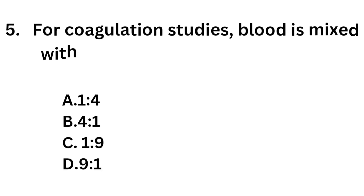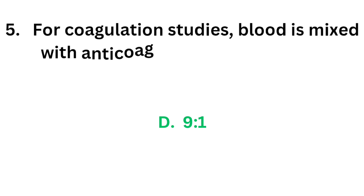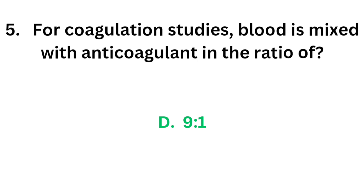Question number 5. For coagulation studies, blood is mixed with anticoagulant in the ratio of: Option A: 1 to 4. Option B: 4 to 1. Option C: 1 to 9. Option D: 9 to 1. The correct answer is Option D, 9 to 1. For coagulation studies, blood is mixed with anticoagulant in the ratio of 9 to 1.